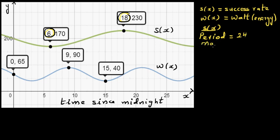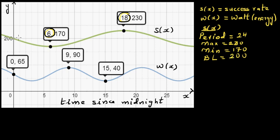The maximum is 230 and the minimum is 170. From these you can write the baseline and the amplitude. The baseline is the average of the two: 400 divided by 2 is 200. The amplitude is the distance from maximum to baseline — so 230 minus 200 gives an amplitude of 30.